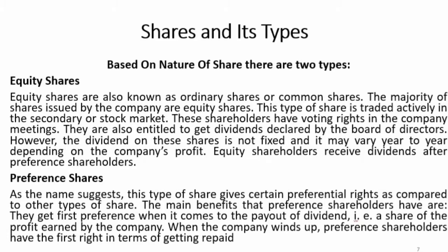When paying dividends, preference shareholders are given priority first, and then common shareholders receive dividends. Preference shareholders get first preference when it comes to dividend payout. If the company winds up, preference shareholders are the first to be repaid and compensated, and the other shareholders — common shareholders — are second.